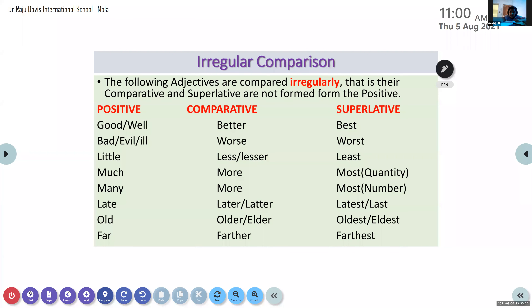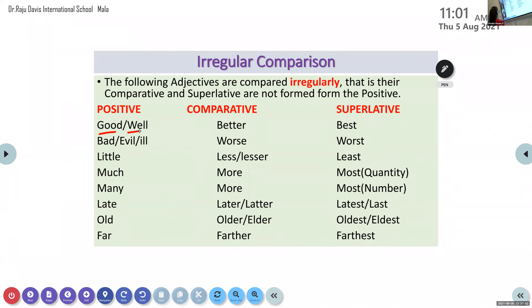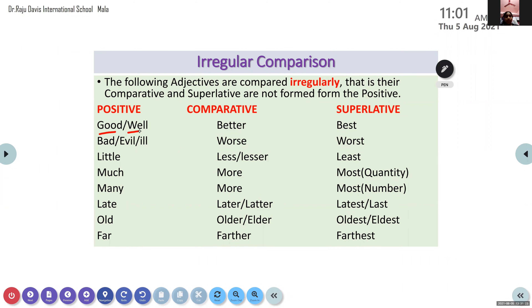The following adjectives are compared irregularly — that is, their comparative and superlative are not formed from the positive. They do not follow the rules of comparison. The first one: good or well — better for comparative, best for superlative. Second one: bad, evil, and ill — worse and worst.